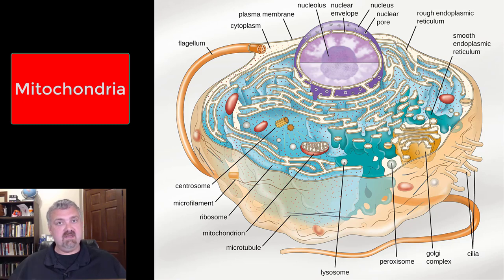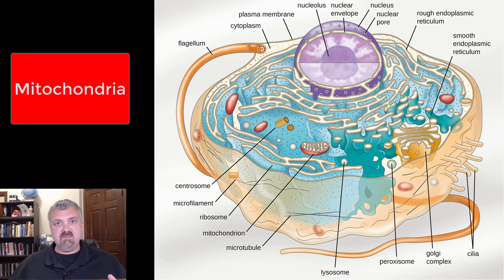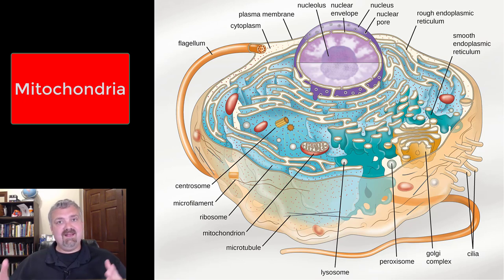We're talking about metabolism. We're going to talk about glycolysis and the Krebs cycle and the electron transport chain. The Krebs cycle and the electron transport chain take place here in the mitochondria.